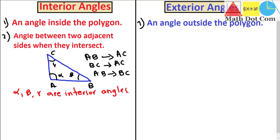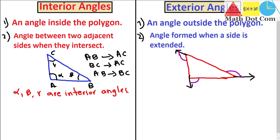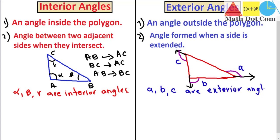The exterior angle is defined as the angle formed when a side is extended. Drawing the triangle again — when we extend the sides of the triangle, we get the exterior angles. Labeling them A, B, and C, these exterior angles are not inside the polygon; they are outside the polygon, formed by extending the sides.